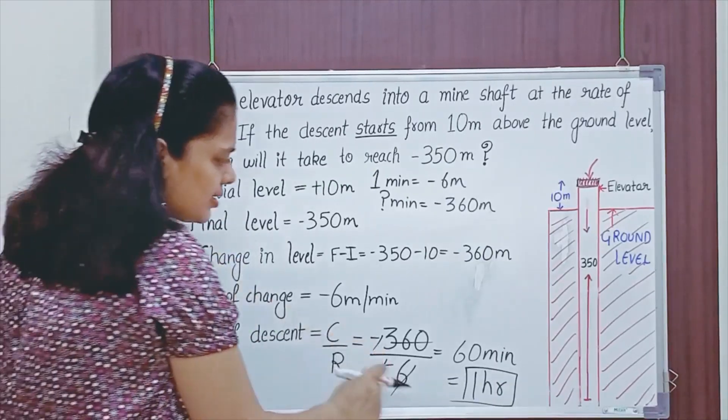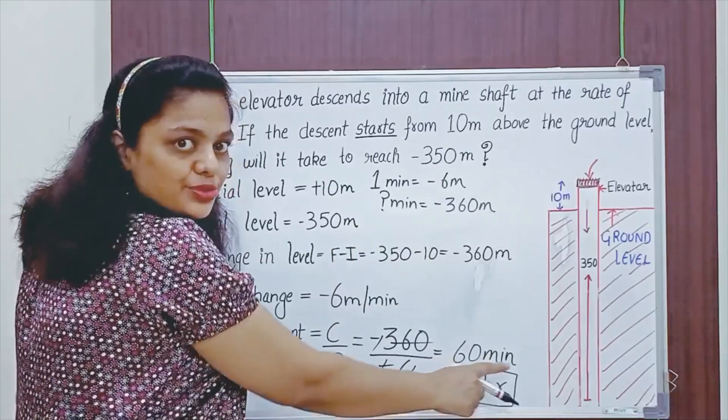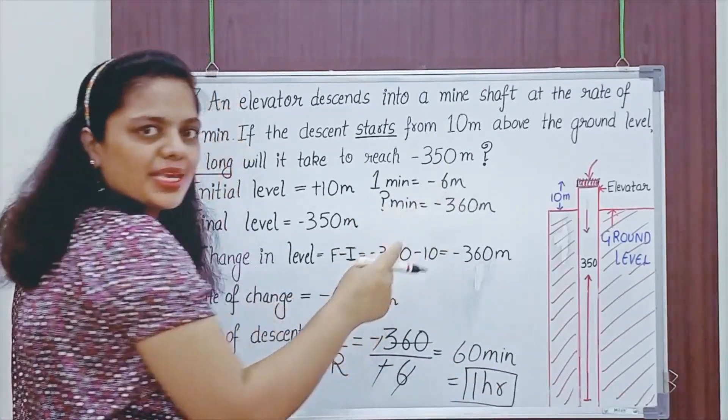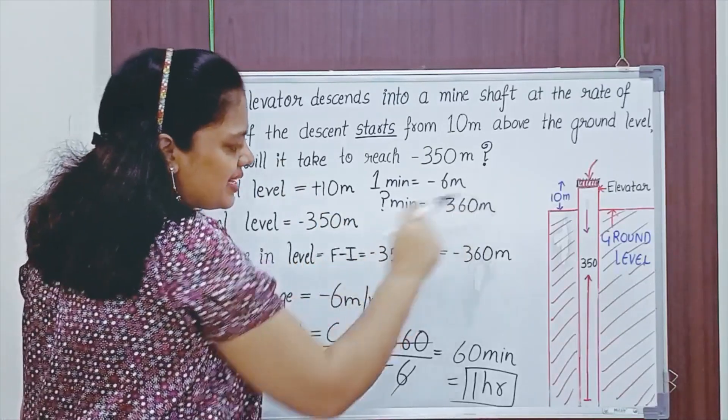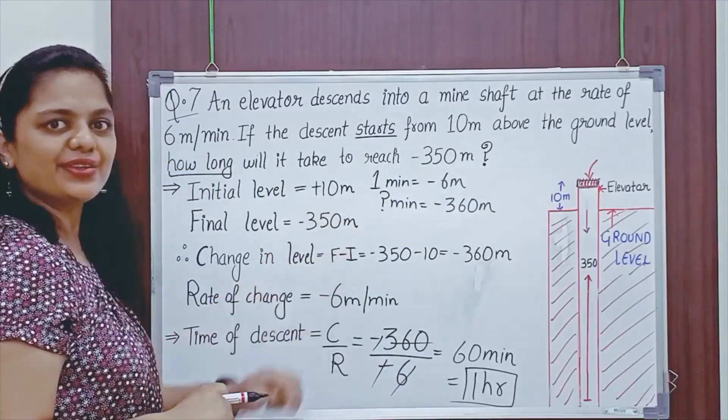Also, you can cross check that minus 360 is right or wrong. When the answer is coming out to be 60 minutes, one minute per minus 6 meters. So, 60 minutes will be minus 6 into 60. So, minus 360. So, you can cross check your answer also. You can make a note of this.